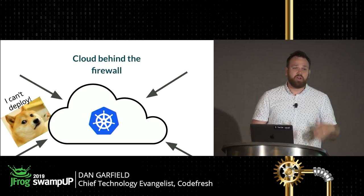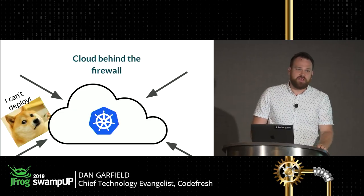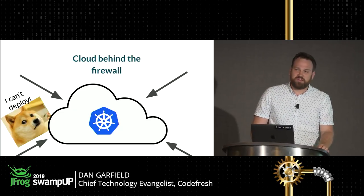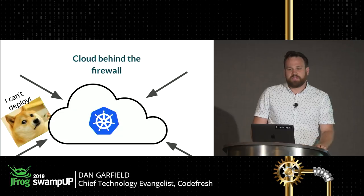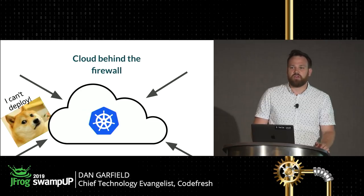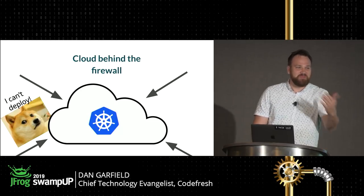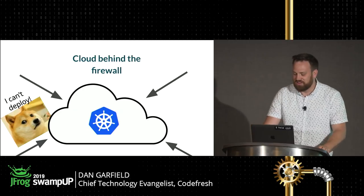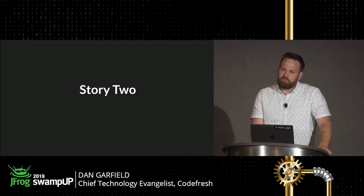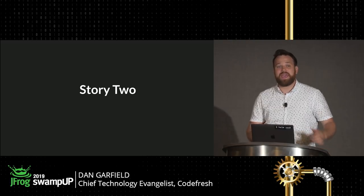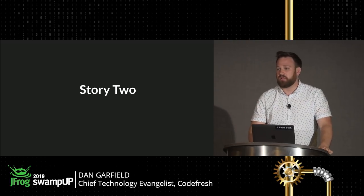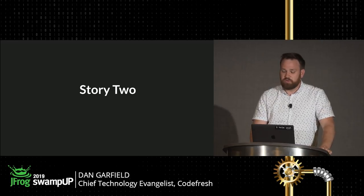A lot of times there's this funny notion. I asked somebody, "Do you deploy on-prem?" And they said, "No, it's in the cloud." I said, "Do you deploy behind the firewall?" And they said, "No, it's in the cloud." But oftentimes, obviously, our cloud resources are behind the firewall — so they are secure. So: how do we deploy to a Kubernetes cluster that's sitting behind a firewall that we can't just call out to and deploy to it?